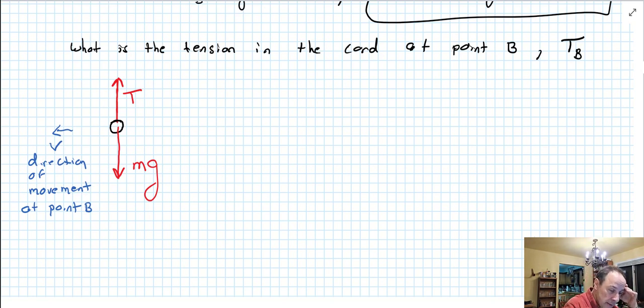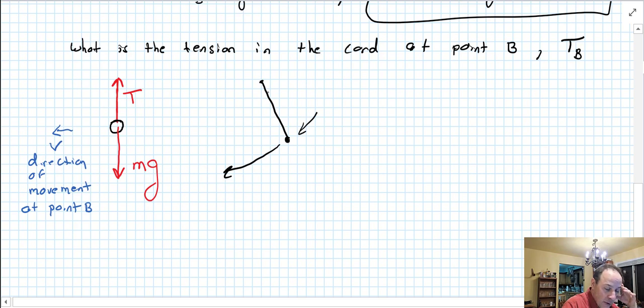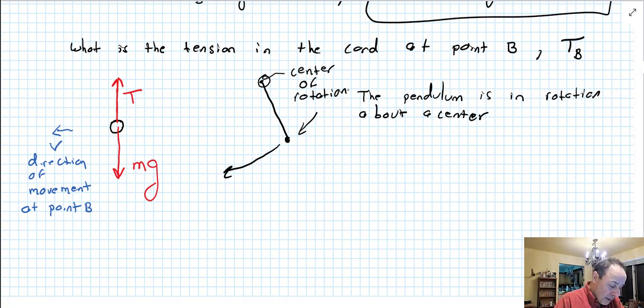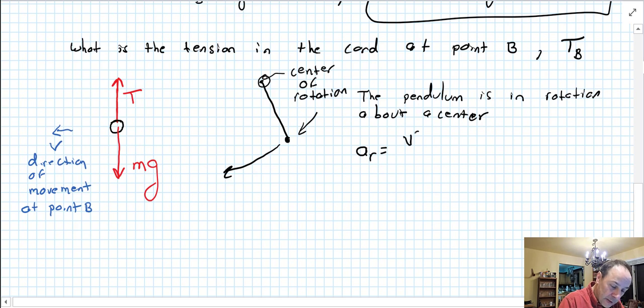Now remember, this thing is moving like this, so the pendulum is in rotation about a center here, wherever it's anchored up here. This is the center of rotation. And we know that anything that's rotating like that will have a centripetal acceleration. So it's going to have a centripetal acceleration we're going to call a_R, and that's going to equal v squared over R.